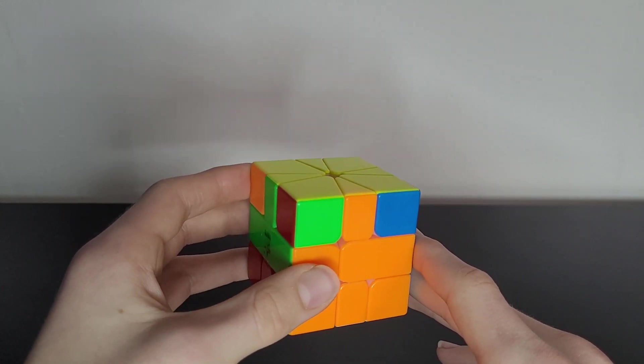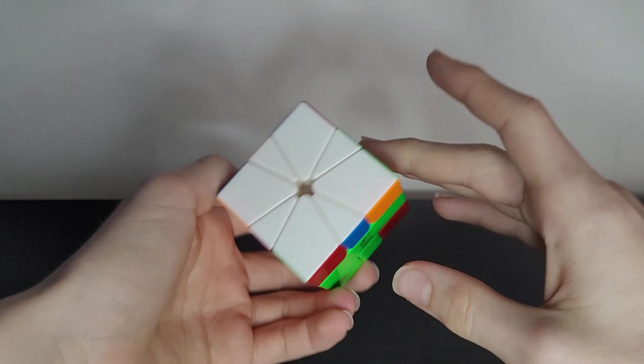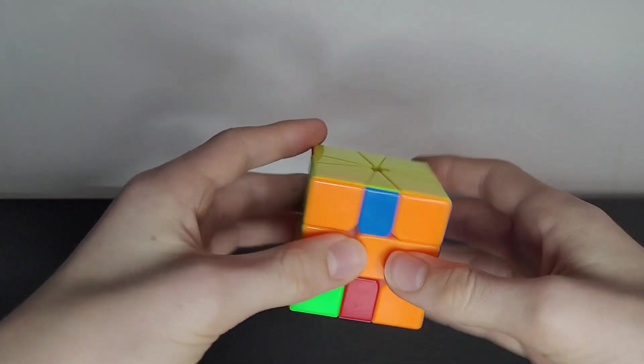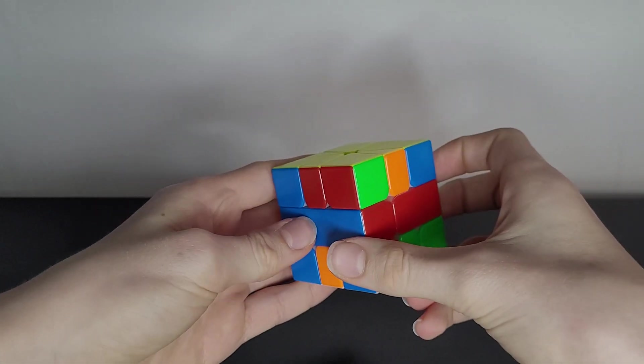On this side I have a solvable G perm and on the yellow side I have an unsolvable case. This means that I have got parity.